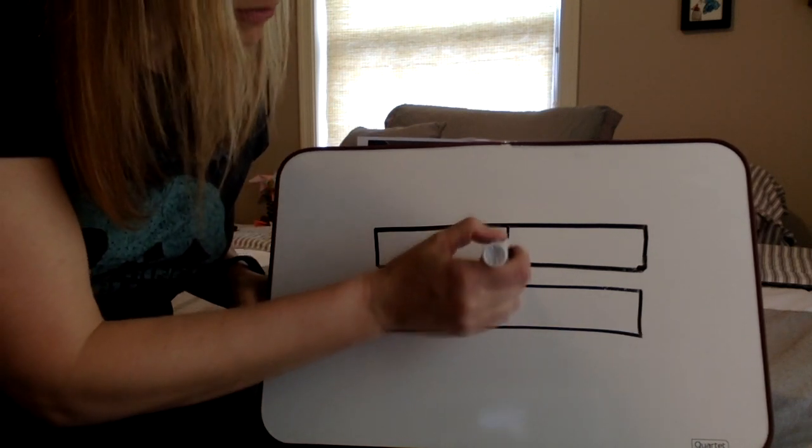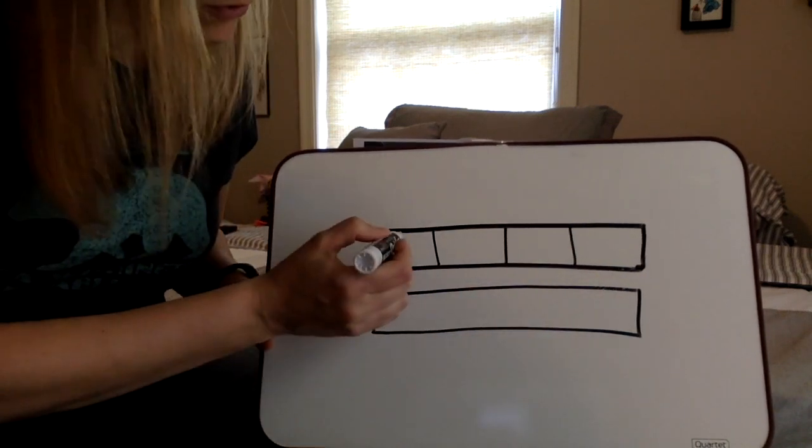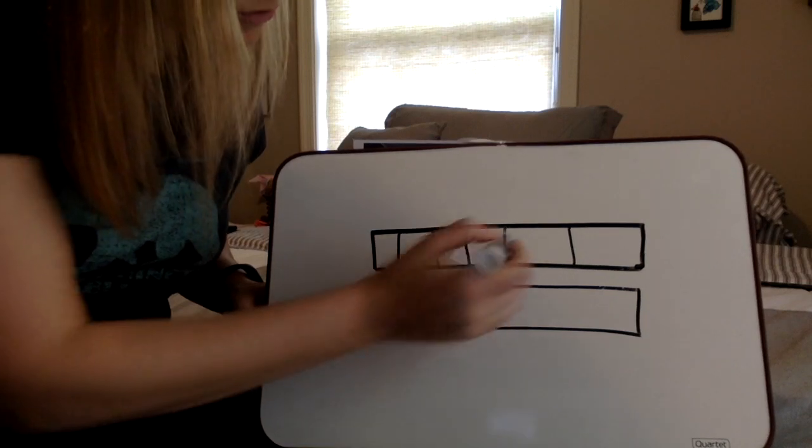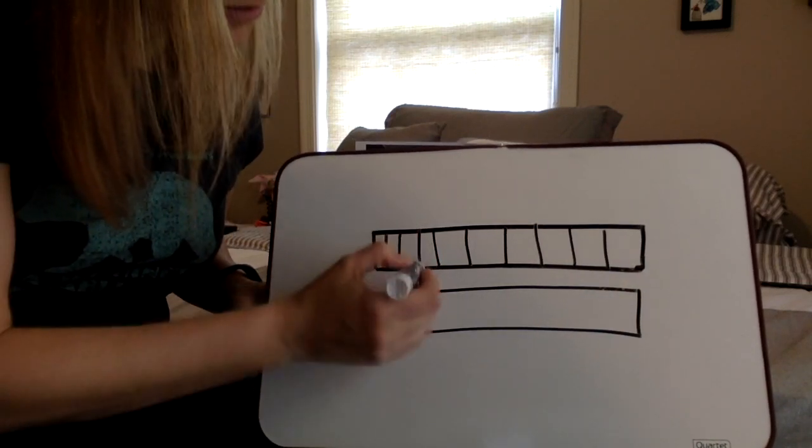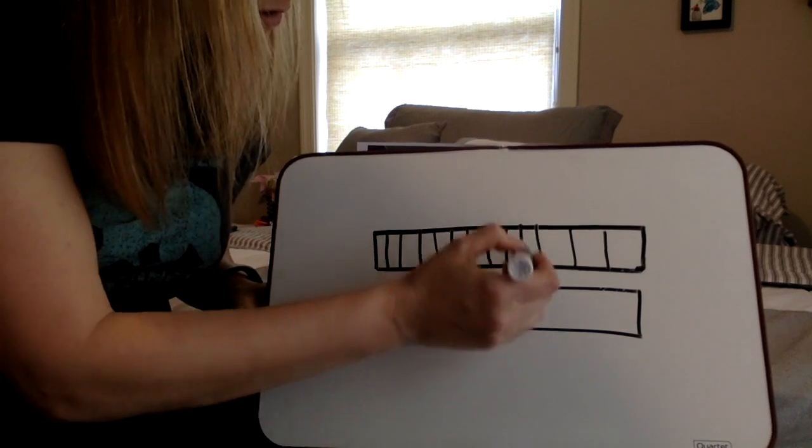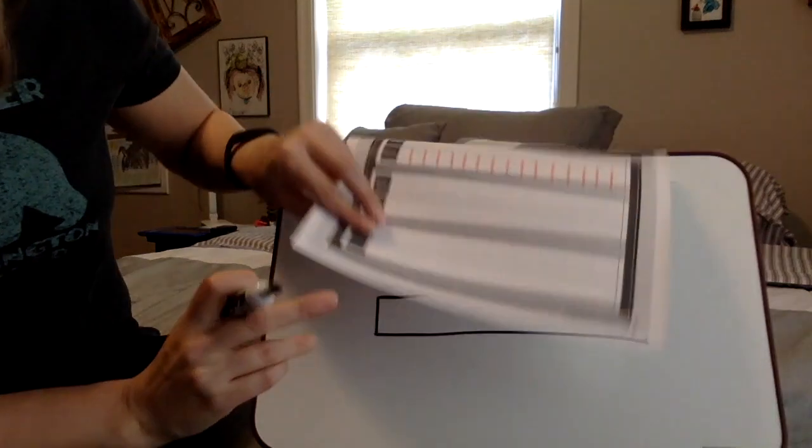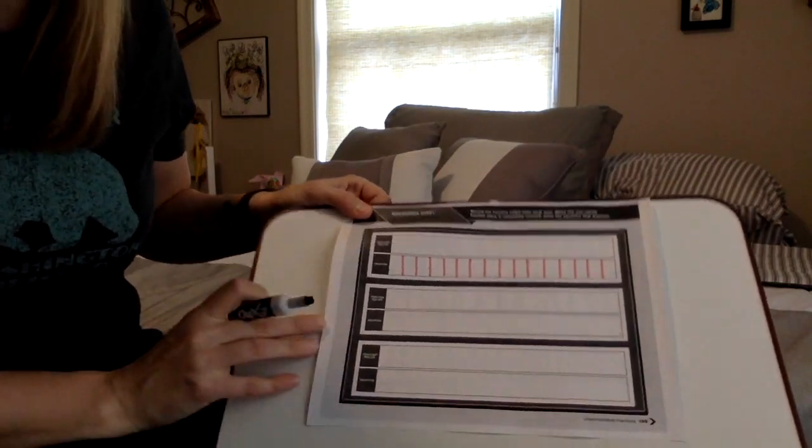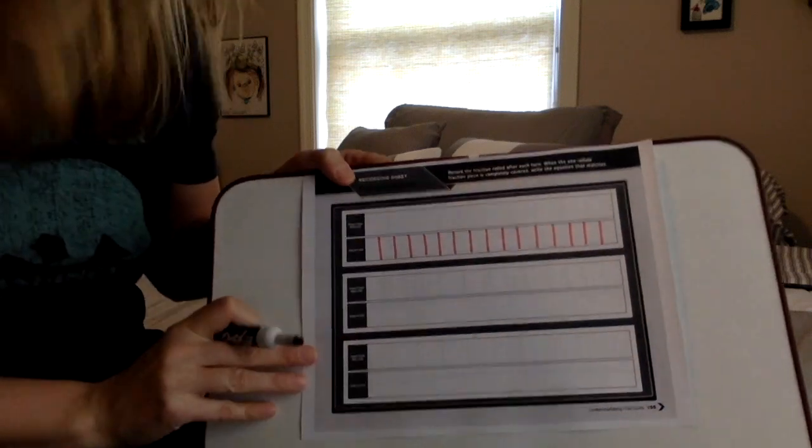So I'm going to start by dividing it in half. Each of those halves gets divided. Now I have fourths. I divide each of those. Now I have eighths. And one more time, I divide each of those in half. And now I have sixteenths. You can see here, I did the same thing on my paper, created sixteenths on my paper here as well.